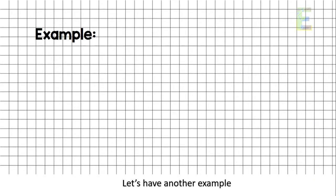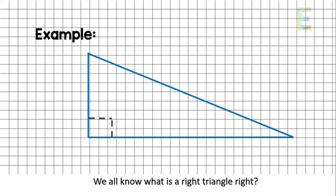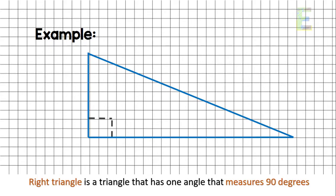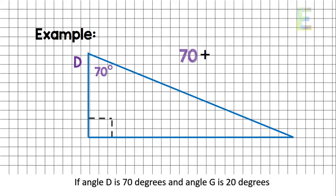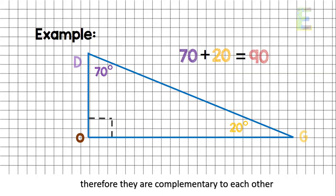Let's have another example. Suppose you have a right triangle. We all know what a right triangle is, right? A right triangle is a triangle that has one angle that measures 90 degrees. So this is a right triangle. If angle D is 70 degrees and angle G is 20 degrees, therefore they are complementary to each other.